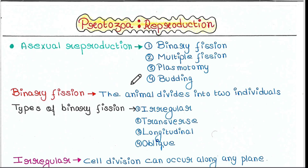Asexual reproduction is of four types: binary fission, multiple fission, plasmotomy, and budding. Binary fission — the animal divides into two individuals. That's why it is called binary fission. Fission means division, and binary means two.